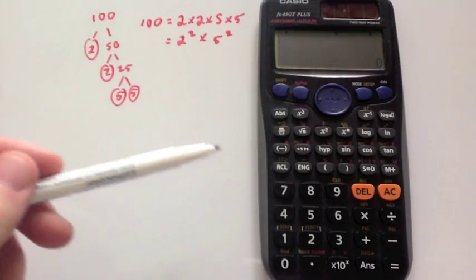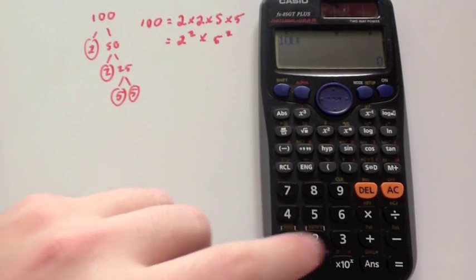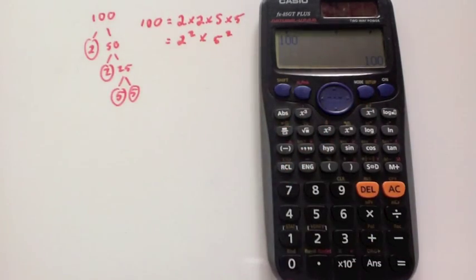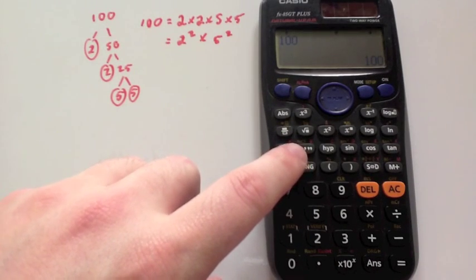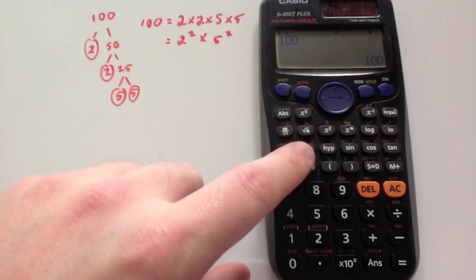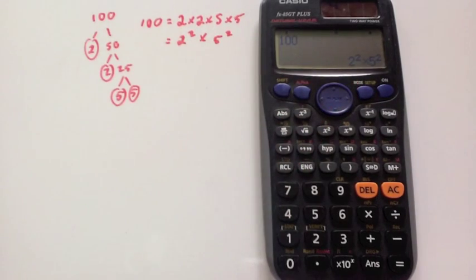But your Casio can do this for you. Type in 100 and press equals. You'll see 100 appears there. In yellow here, beside the B, you've got the word fact. Press shift and then press that fact button, and it will write it as a product of primes for you. That's how you write a number as a product of primes using your calculator.